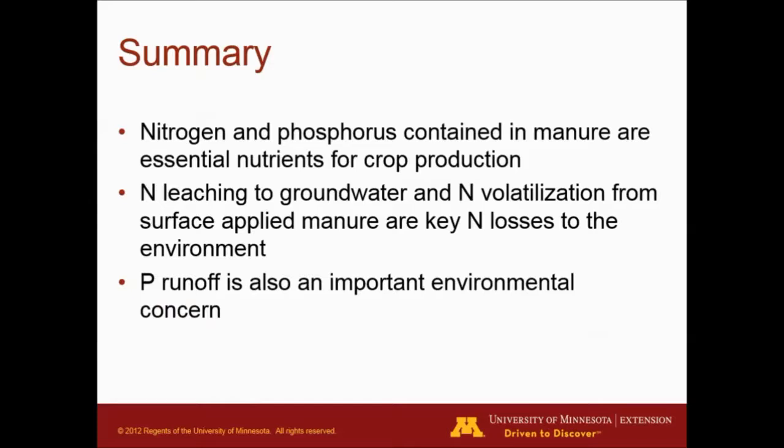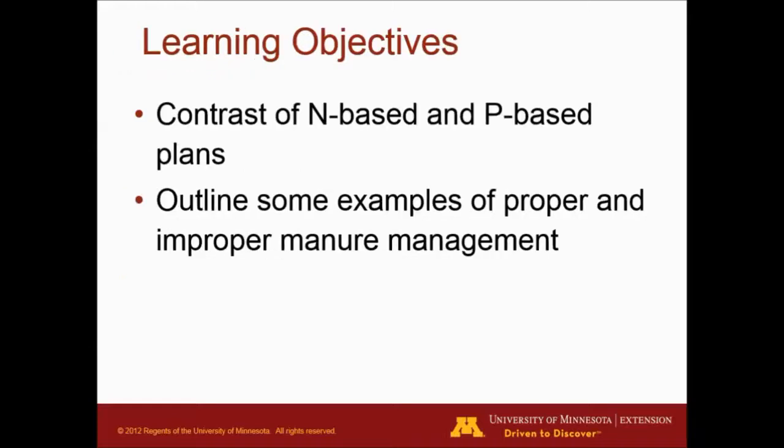The summary of the previous parts: nitrogen and phosphorus containing manure are essential nutrients for crop production. However, there are some factors like nitrogen leaching to groundwater and nitrogen volatilization from surface applied manure that can cause losses to the environment. Phosphorus runoff is also a key important loss into the environment.